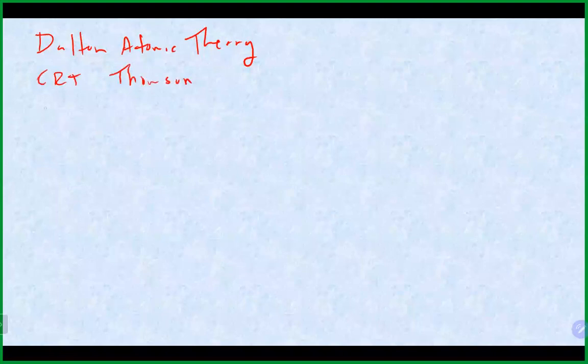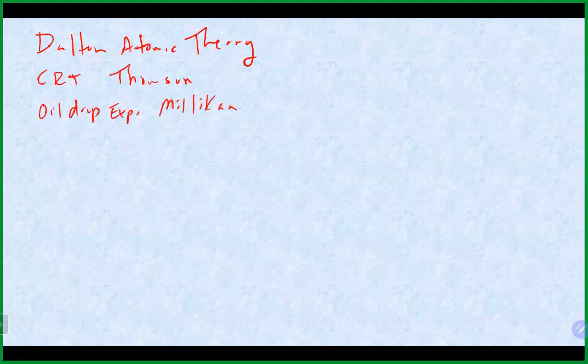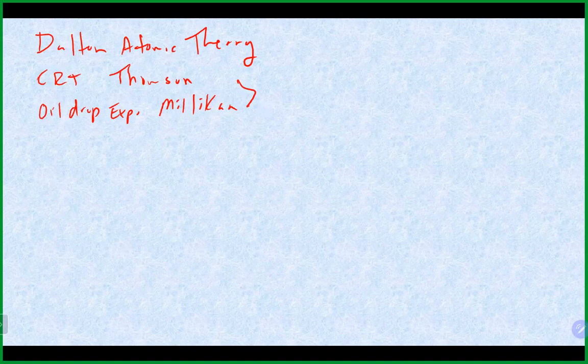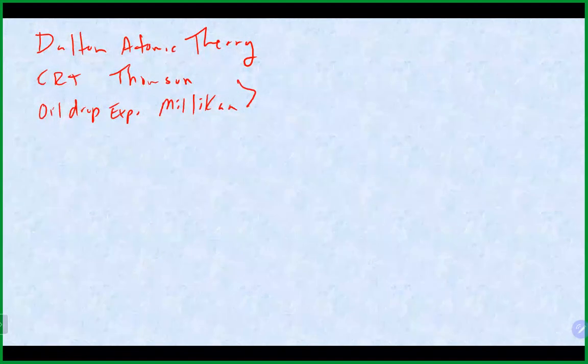We had Millikan and the oil drop experiment, which led to a better understanding of the mass of an electron — 9.09 times 10 to the minus 28 grams. That led to sort of an early model of the atom, which was the plum pudding model.